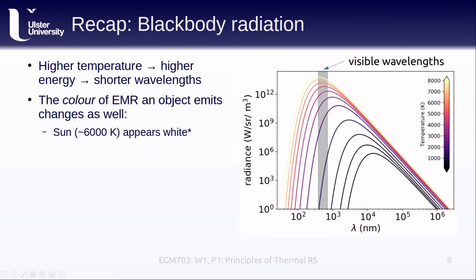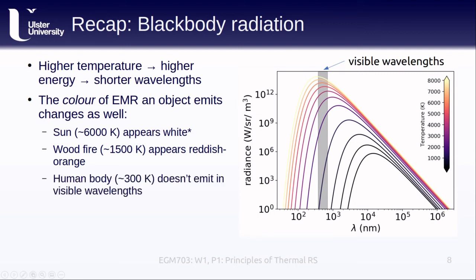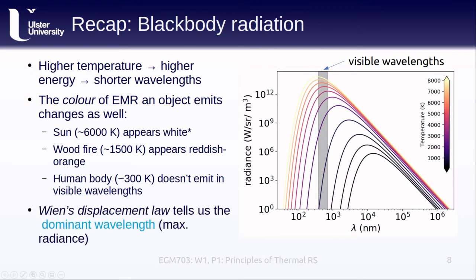In space, our sun appears mostly white because it emits fairly evenly across the wavelengths that we can see with our eyes. Wood fires, with a temperature of around 1,500 Kelvin, appear mostly reddish-orange to our eyes, while the human body, at about 300 Kelvin, doesn't really emit at all in the wavelengths that our eyes can see. We can calculate the dominant wavelength that an object emits at — the color of its maximum radiance — using something called Wien's displacement law, which is one for you to look up later.